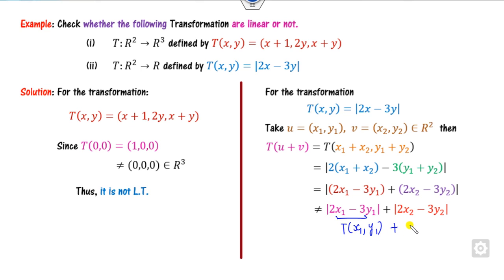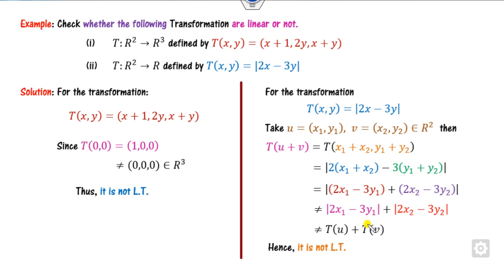Here, the first component corresponds to x₁, y₁, which is U, and the second to x₂, y₂. Since this is not equal to T(U) plus T(V), the mapping is not a linear transformation.